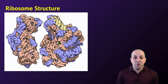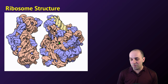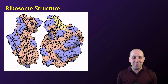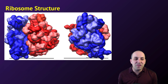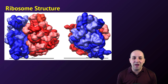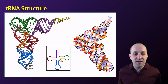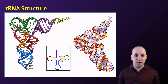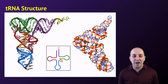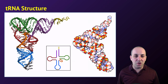The ribosome is made out of two different subunits that assemble together during the process of translation. You can actually see the ribosomal RNA molecules in these images. During translation, the two subunits of the ribosome will come together around the mRNA transcript in order to allow for translation to occur. tRNA molecules look somewhat different — they're each made out of one continuous strand of RNA that base pairs with itself and forms a highly convoluted three-dimensional conformation.